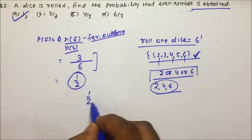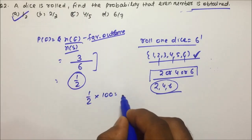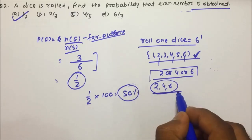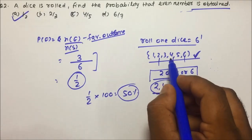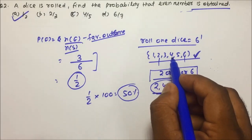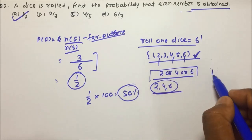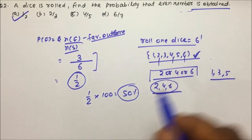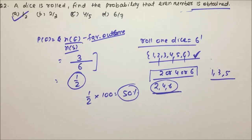If they ask in terms of percentage, multiply by 100 — so there is a 50% chance of getting an even number. Similarly, there is a 50% chance of getting an odd number, which is 1, 3, or 5. So this was the basics of dice. In the next video we will learn more about dice problems. I hope you understood both question 1 and question 2. Thanks a lot for watching the video.